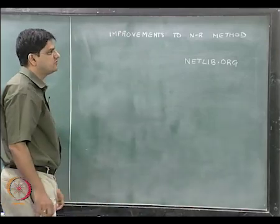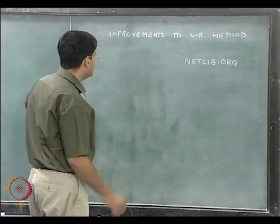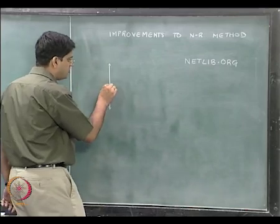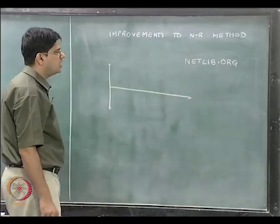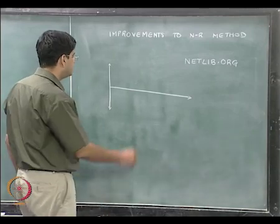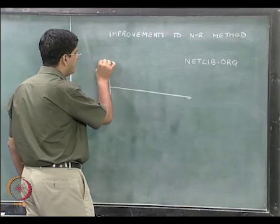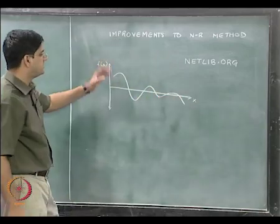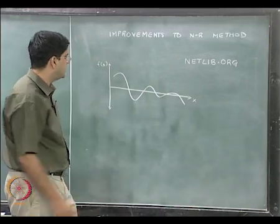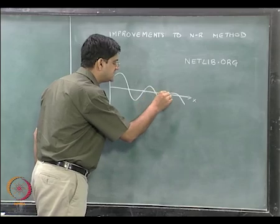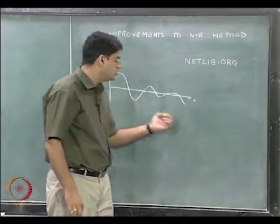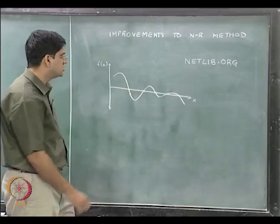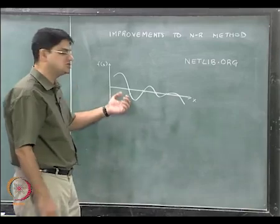The improvements to the Newton-Raphson method: there are several ways in which people have figured out how to improve the Newton-Raphson method, and all of them are for looking at a particular set of problems. One of the improvements done by Ralston is for when we have f(x) versus x and f(x) intersects the x-axis at multiple points. We know that Newton-Raphson, starting from an initial guess close enough to the solution, converges very quickly with second-order convergence.